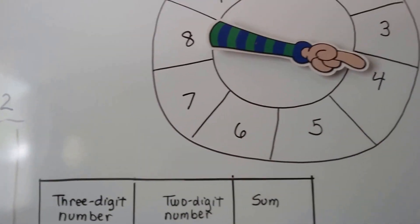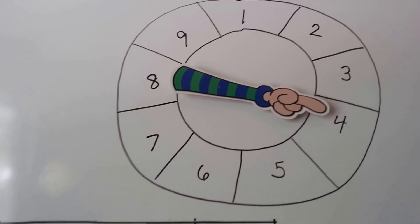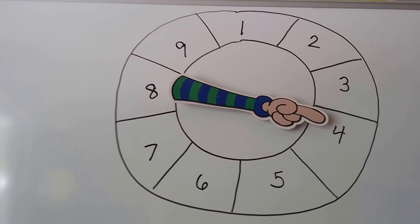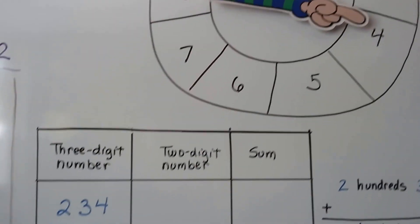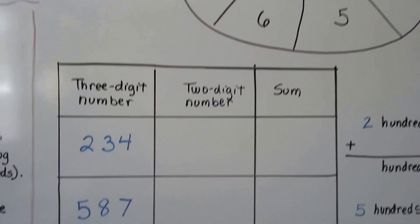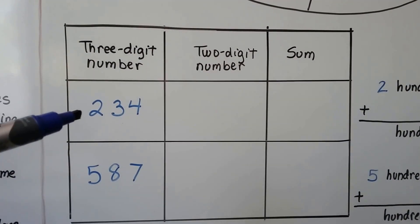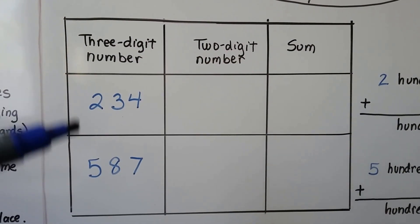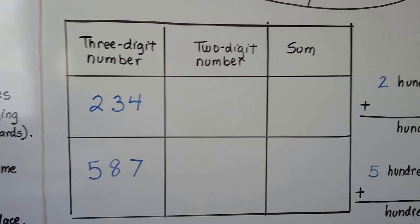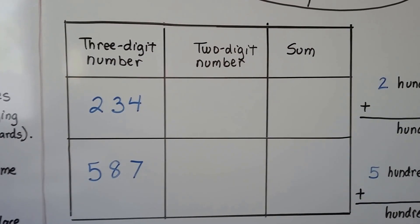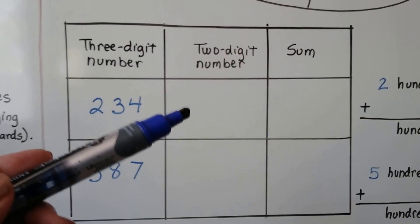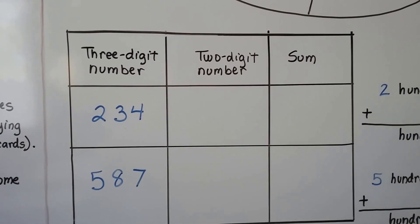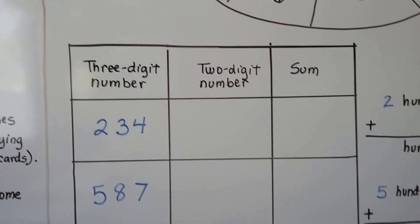I'm going to use a spinner and I've got my numbers one through nine around my spinner and I made a little chart. Here are the three-digit numbers that I came up with: 234 and 587. I'm going to spin the spinner two times to come up with a two-digit number to add to 234.